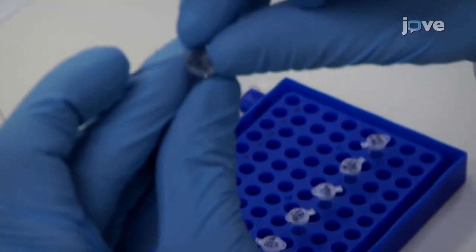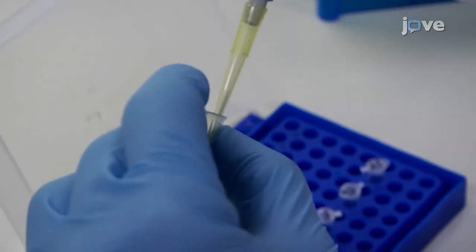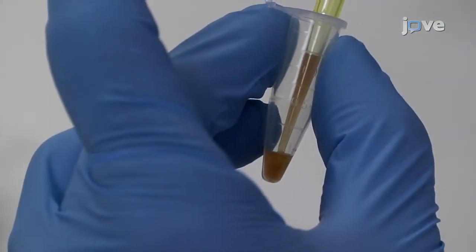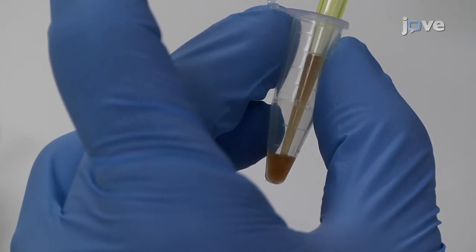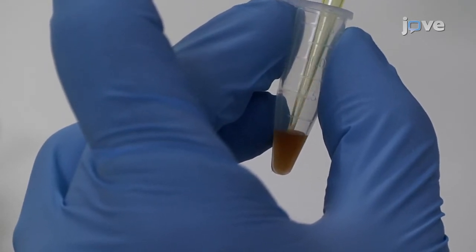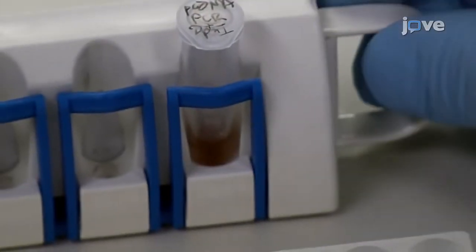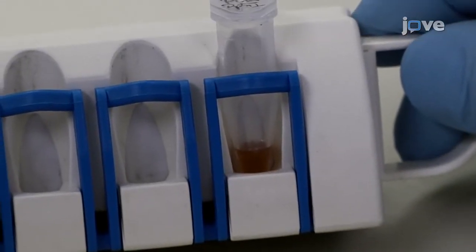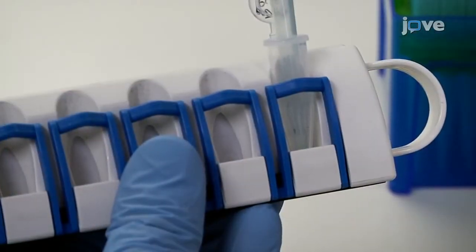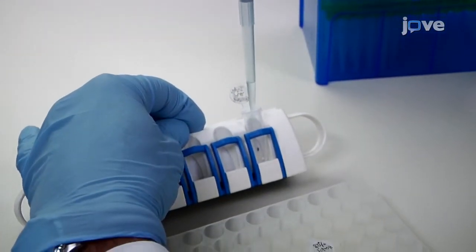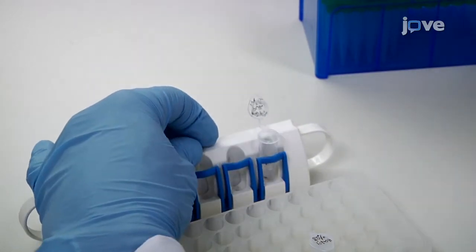Transfer the PCRs pre-digested with DPN1 to 1.5 milliliter tubes and add 81 microliters of DNA purification magnetic beads to each tube. Incubate the mixture at room temperature for 10 minutes. Place the tubes on the magnetic collector for 2 minutes. Now, discard the clear liquid. Wash twice with 200 microliters of 80% ethanol for 30 seconds.